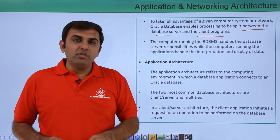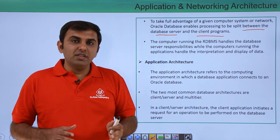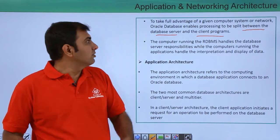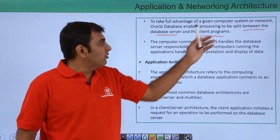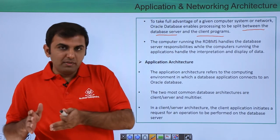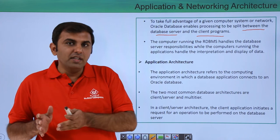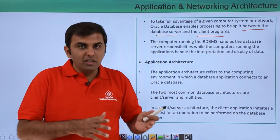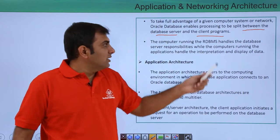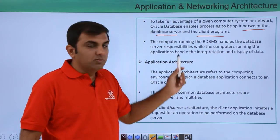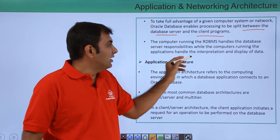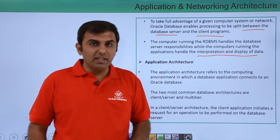Whatever activity you are doing, like you just want to access the data from the database, Oracle Database has divided these things into two things: one is a database server and one is a client program. The client is going to be connected to your Oracle Database and whatever information is required, that database server gives to the client. The computer running the RDBMS handles the database server responsibility, while the computer running the application handles the interpretation and displaying the data.